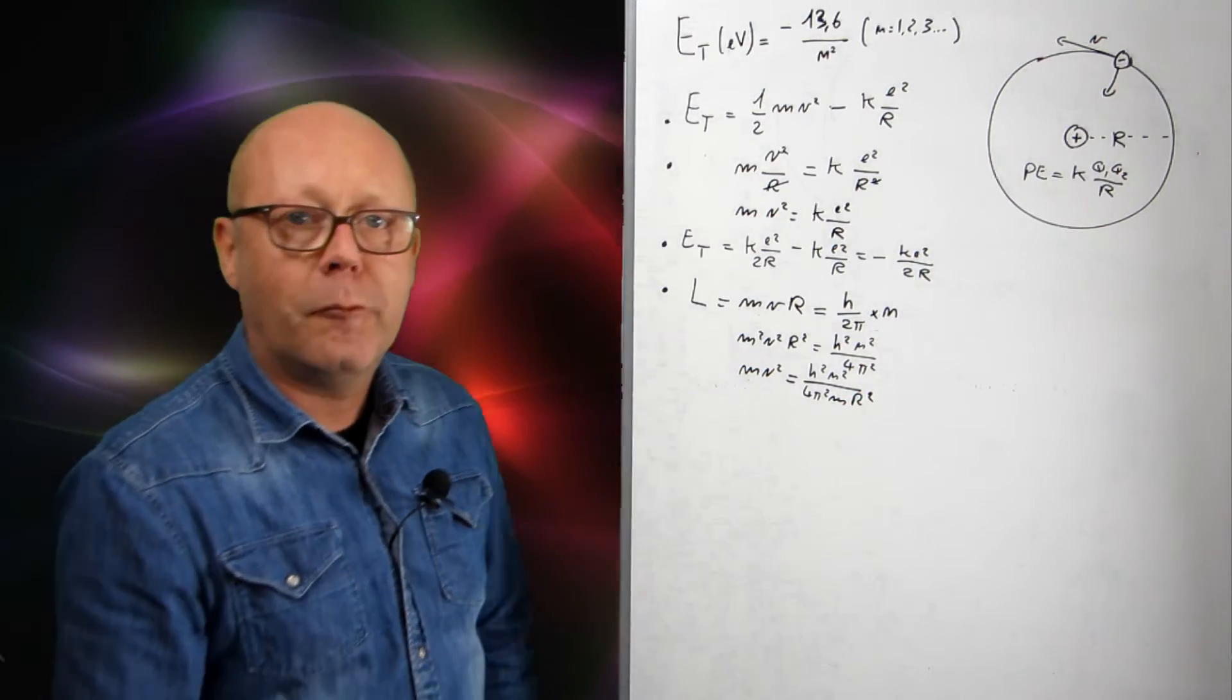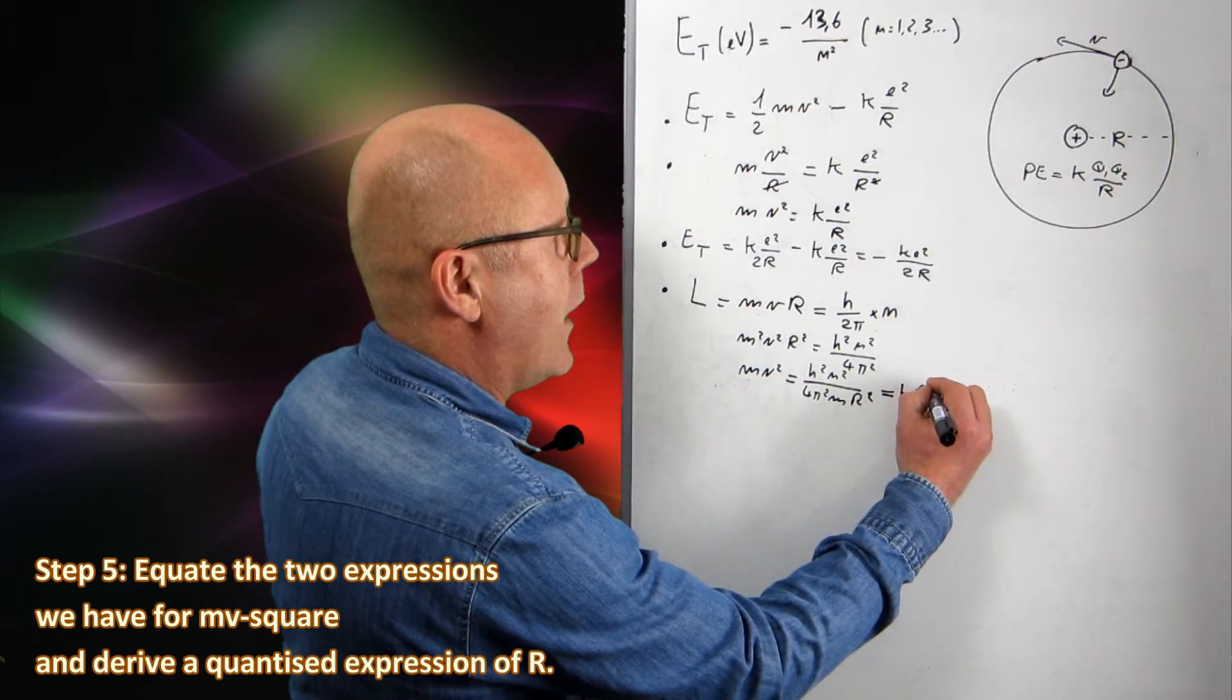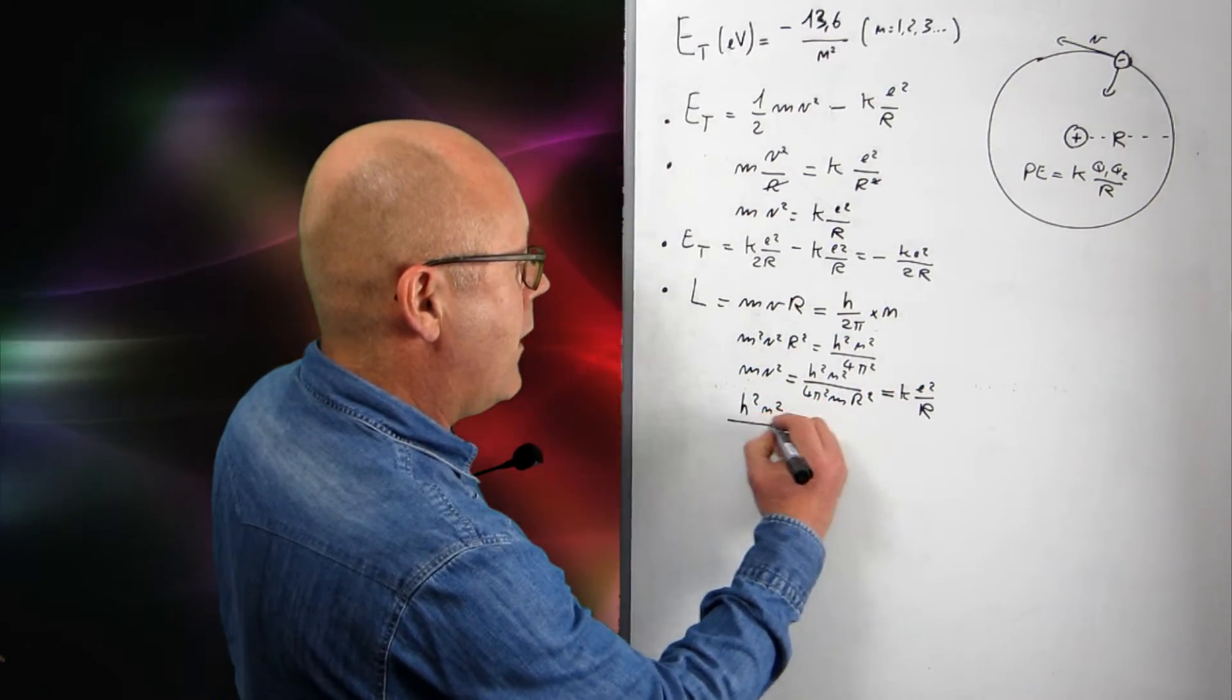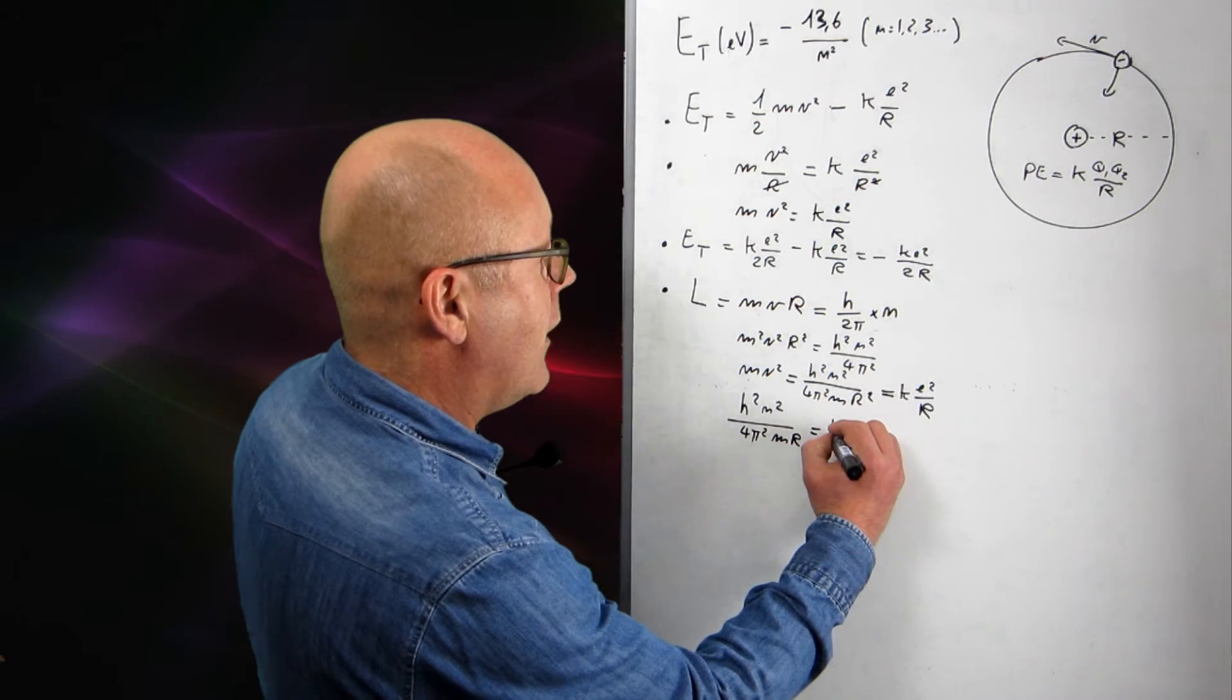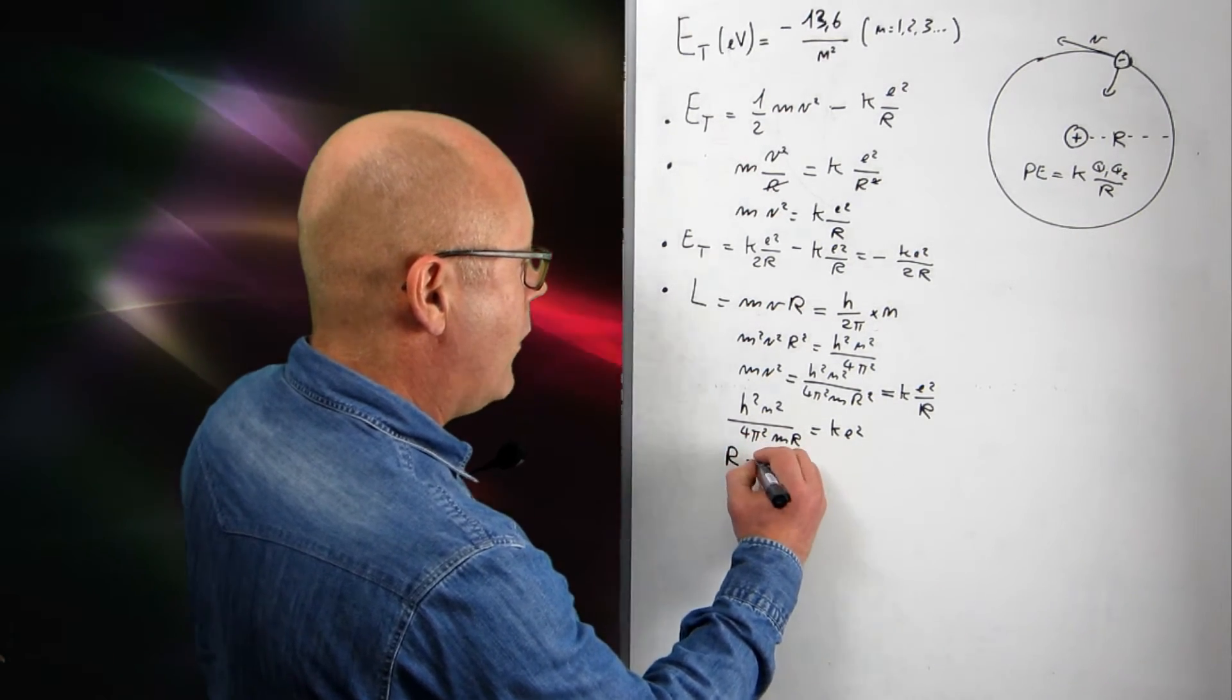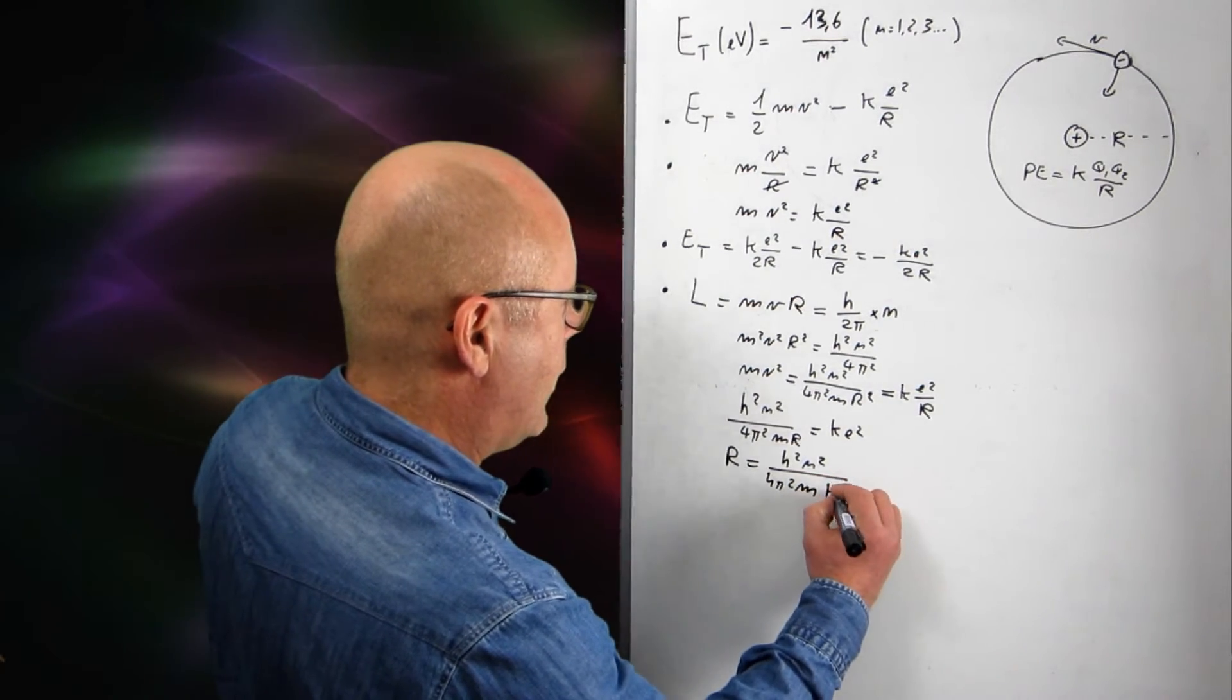mv-squared is going to be equal to h-squared n-squared divided by 4pi-squared m and divided by r-squared. I didn't forget anything? No, I'm good. Well, this, I'm going to inject it in here, or actually equate it directly to k e-squared on r. Now, I see that I am going to write it again. h-squared n-squared divided by 4pi-squared m, r. I'm going to get rid of one of the r's in the process, k e-squared. Now, I can express r. That's what I'm going to do. I'm expressing r. r will be equal to h-squared n-squared divided by 4pi-squared m k e-squared.